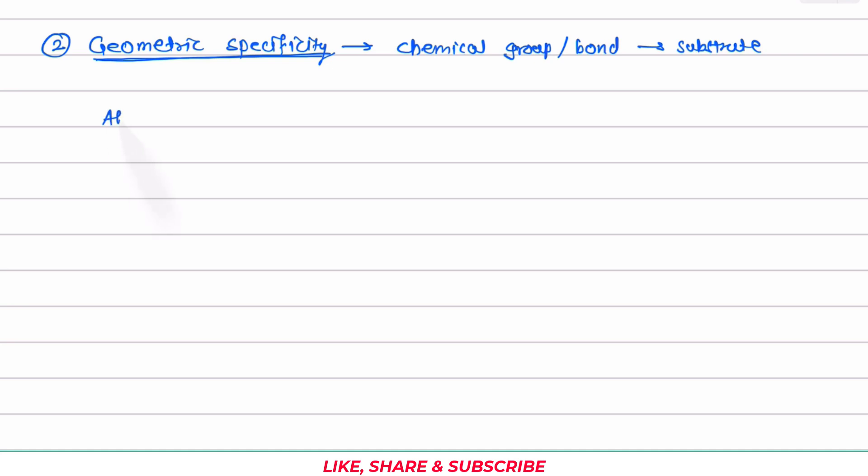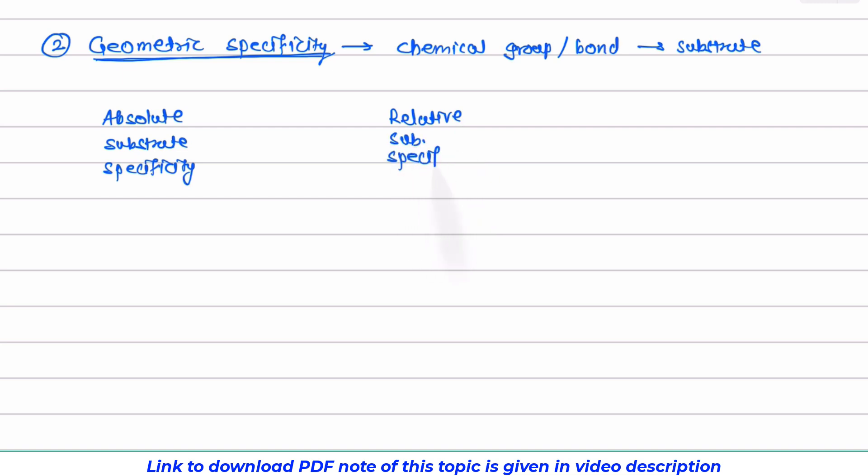The first group is the absolute substrate specificity. The second one is the relative substrate specificity. And the third one is the broad substrate specificity.